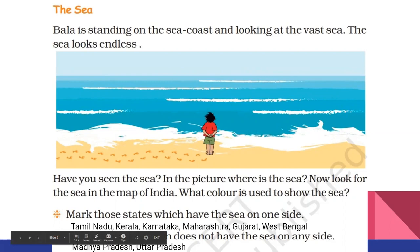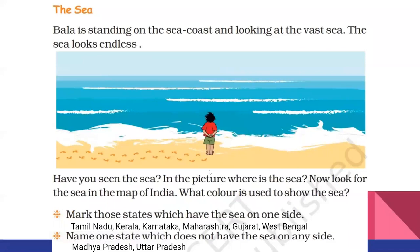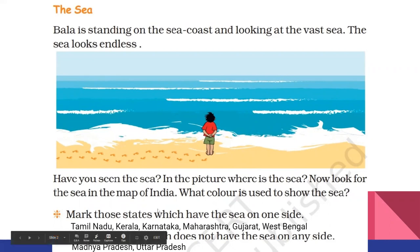Now you can see the sea on the map of India. What color is used to show the sea? Blue color is used for showing the sea.